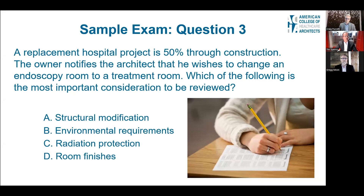The next question: A replacement hospital is 50% through construction. The owner notifies the architect that he or she wishes to change an endoscopy room to a treatment room. Which of the following is the most important consideration to be reviewed? This is one of those 'most' questions, and it's probably one you don't want to read too much into. The four answers are: structural modifications, environmental requirements, radiation protection, and room finishes. We know there's no information given on structural, so don't read into the question.